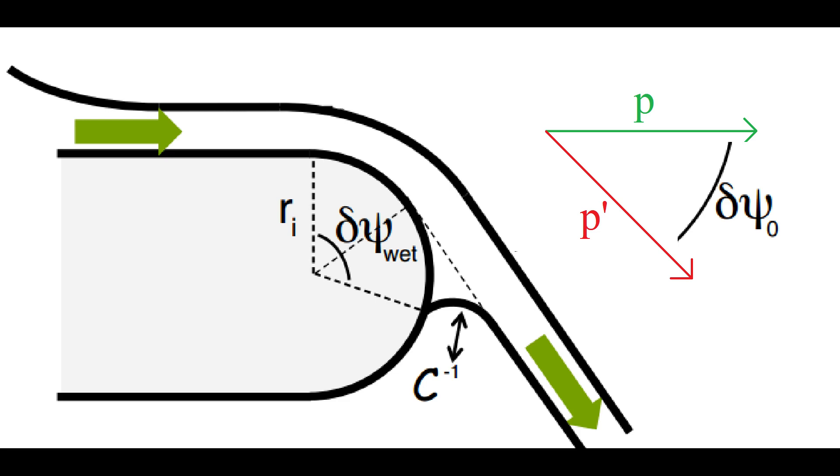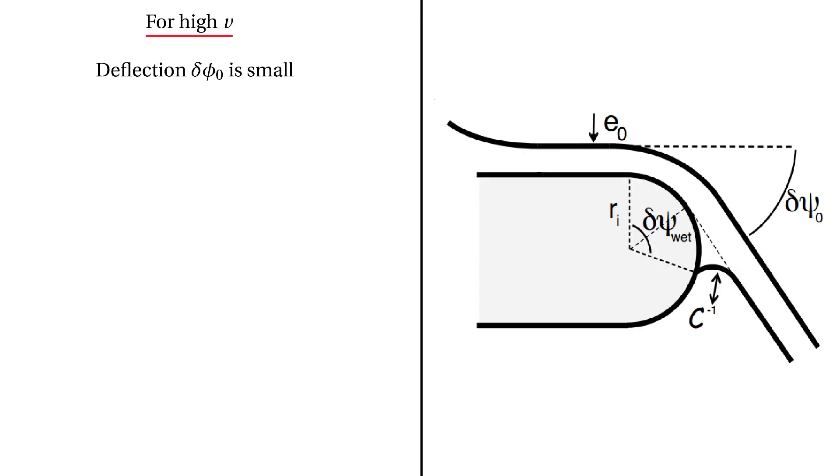The difference in momentum is caused by the centripetal force, and the only force that can act as a centripetal force is the adherence force. Thus the centripetal and adherence force have to be equal. Now if the velocity of the fluid is high, the deflection of the stream will be small.